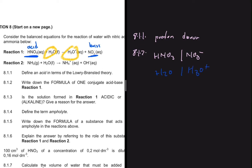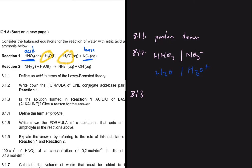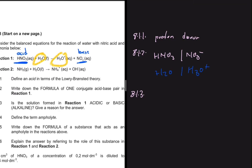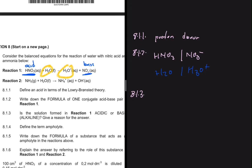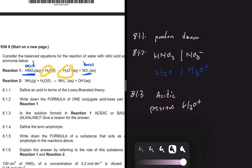8.1.3 asks: is the solution formed in reaction one acidic or basic? Give a reason. The solution formed in reaction one is acidic. It is acidic because of the presence of H3O plus. If we have H3O plus or H plus, that makes a solution acidic. Here we have H3O plus, but in a different situation you could have H plus and it would still be acidic.